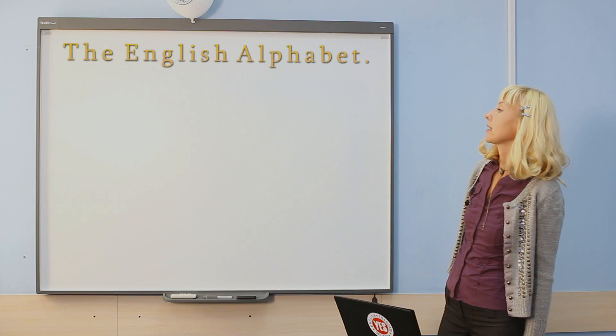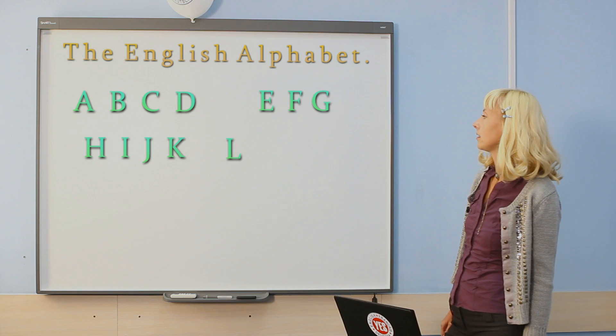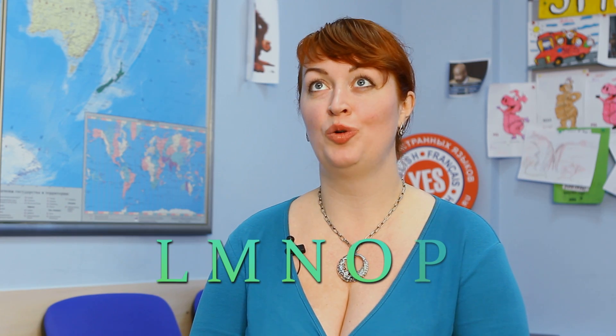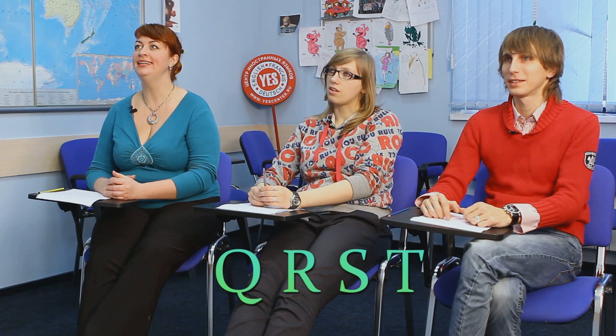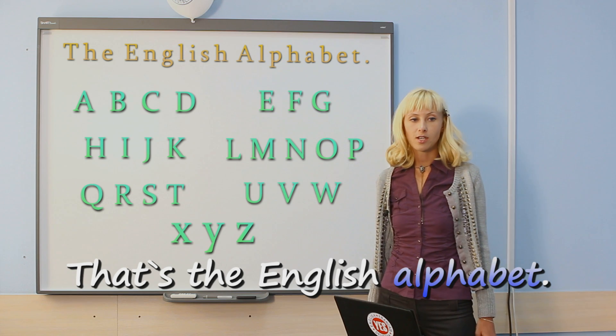Now say the alphabet. A, B, C, D, E, F, G, H, I, J, K, L, M, N, O, P, Q, R, S, T, U, V, W, X, Y, Z. That's the English alphabet.